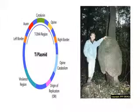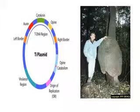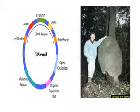These opines are not utilized by the plant. Instead, the opines are necessary for the Ti plasmid and for the agrobacterium for its own survival. This is why it synthesizes the opines in the host cells, but host cells cannot utilize them. The agrobacterium has its own opine catabolism region, and through catabolism of the opines synthesized in the host cells, it survives and multiplies.